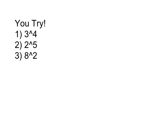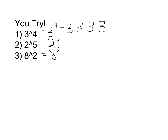Here's your turn. This says 3 to the fourth power — 3 carat 4. You could also write that as 3 to the fourth power. 2 carat 5 says 2 to the fifth power. And then 8 carat 2, or 8 to the second power, or 8 squared. I'm going to go ahead and get you started on this first problem. 3 to the fourth power is going to be 3 times itself 4 times: 3 times 3 times 3 times 3. Go ahead and finish the rest.